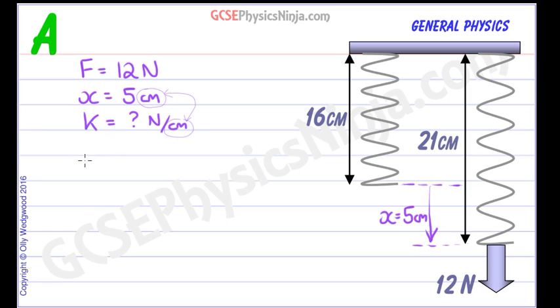The equation is f equals k times x. So first of all we've listed our data. We've then written down the equation which links all the data together.